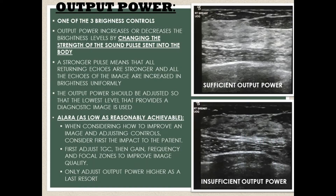The output power control is one of the three brightness controls on an ultrasound machine, and it increases or decreases the brightness level of the entire image by changing the strength of the sound pulse that's sent into the body. A stronger pulse means that all returning echoes are stronger, and all the echoes of the image are increased in brightness uniformly.